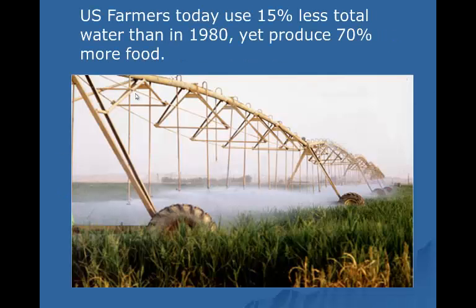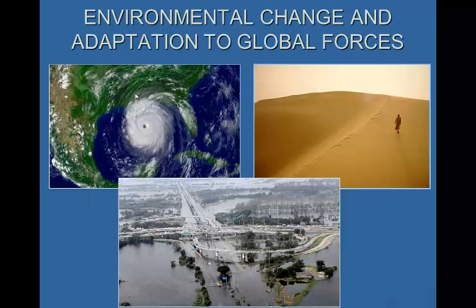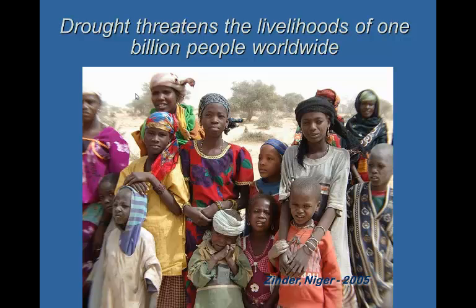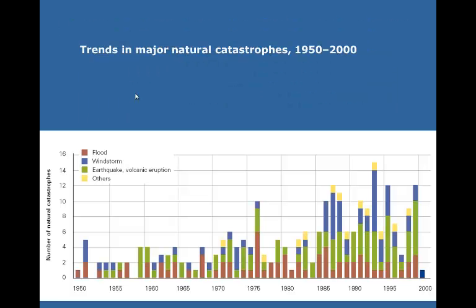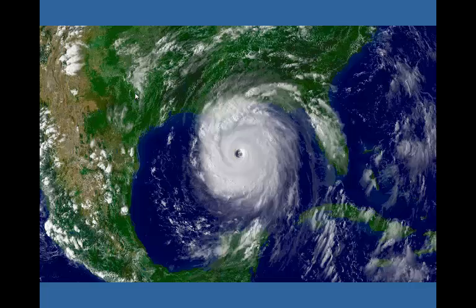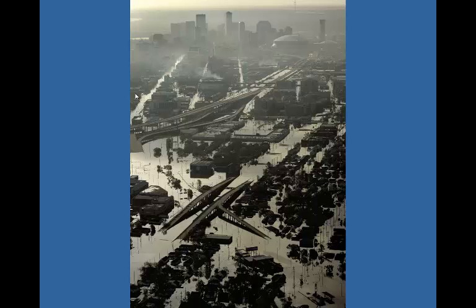U.S. farmers today use less water than they did just 30 years ago, yet produce 70% more food. We're on our way, but we still have a long way to go. Another major topic is climate and extreme hydrologic events. Drought is the biggest of these, but typhoons, hurricanes, and flooding also cause much human misery. A figure shows the increase in major natural catastrophes since the 1950s, reflecting the increase in human population. The Earth has always used extreme events — tsunamis, floods, droughts — to move mountains, rivers, and species about. Extreme events become catastrophes when human civilization gets in the way. Hurricane Sandy on the U.S. East Coast and Hurricane Katrina in New Orleans showed the vulnerabilities of our coastal cities to extreme events.